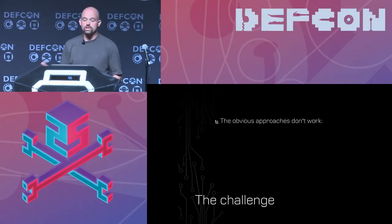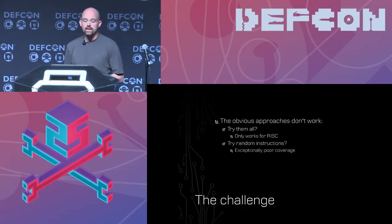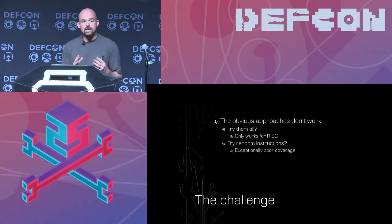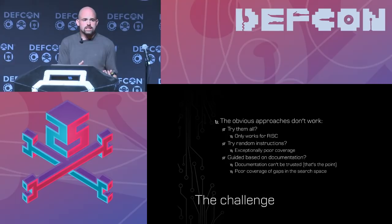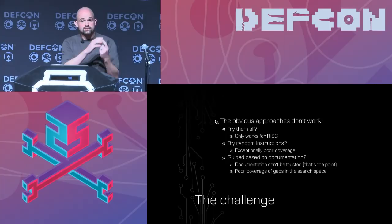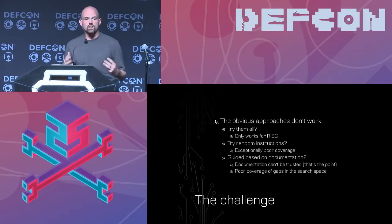The obvious approaches just don't work. Trying all x86 instructions might work for a RISC chip with a fixed-length instruction set, but not for x86 — there's way too much. Random instructions could run for 10 years and still cover a tiny portion of the search space. Basing the search on documentation fails because the documentation can't be trusted — you're doomed from the start. And exploring gaps in the manuals only tells you the first byte; a 15-byte hidden instruction still leaves a long way to search. We need a better approach.